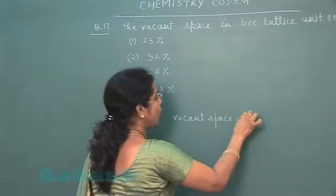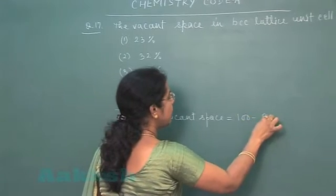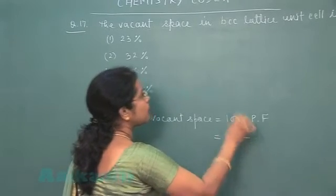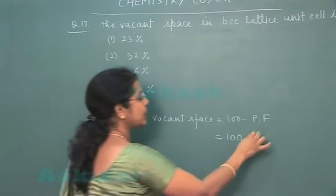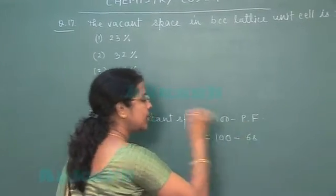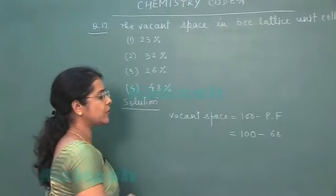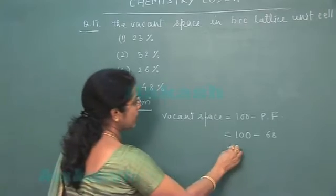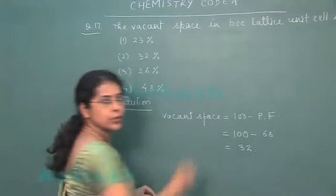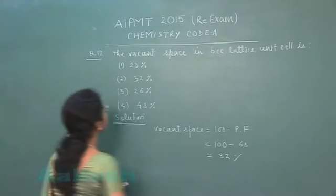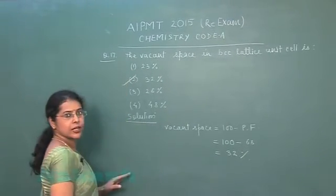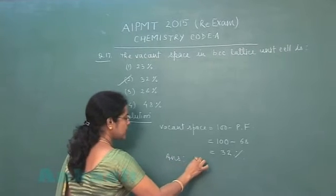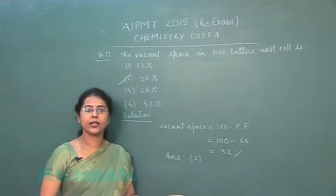is always 100 minus packing fraction. Now in BCC lattice, packing fraction of unit cell is 68%. So if we subtract 68 from 100, then answer should be 32%. It means the correct answer should be the second one. So answer is second option, correct answer.